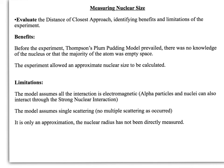The last thing to look at is the benefits and limitations of the alpha scattering experiment. Before this experiment, Thomson's plum pudding model was the prevailing model accepted amongst scientists — they didn't know about the nucleus or that most of the atom was empty space. So this was a very revolutionary experiment with a big impact on scientific thinking. It also allowed an approximate calculation of nuclear size, which is useful for developing models of atomic structure.